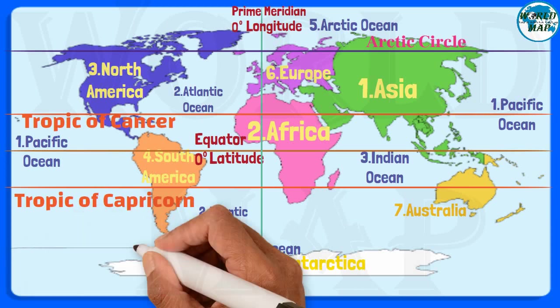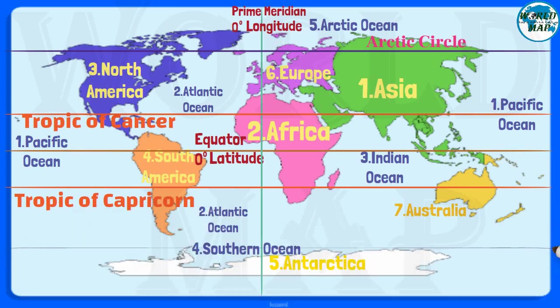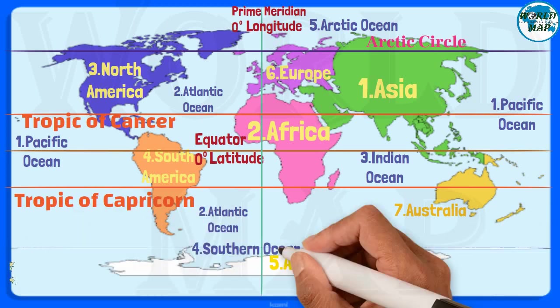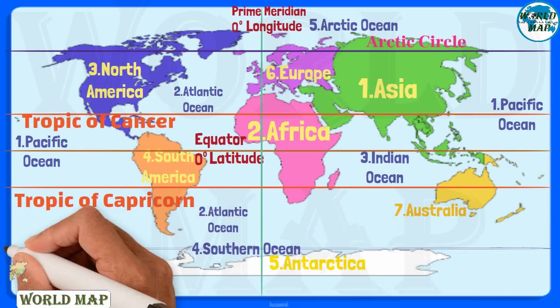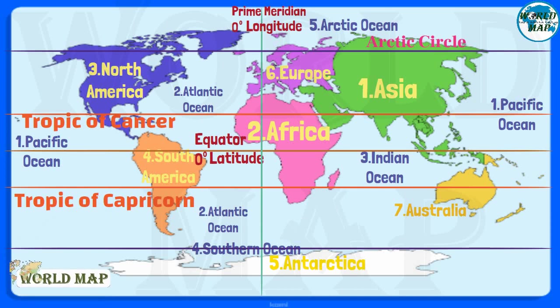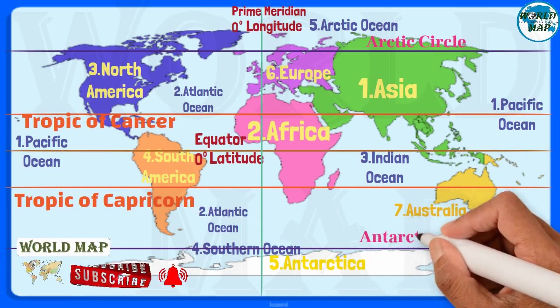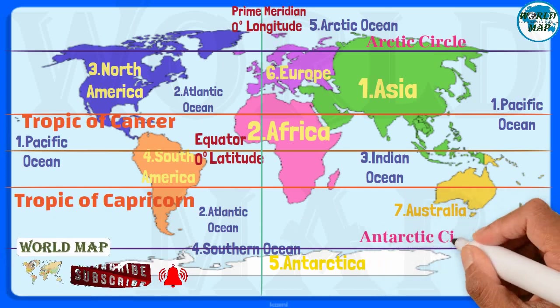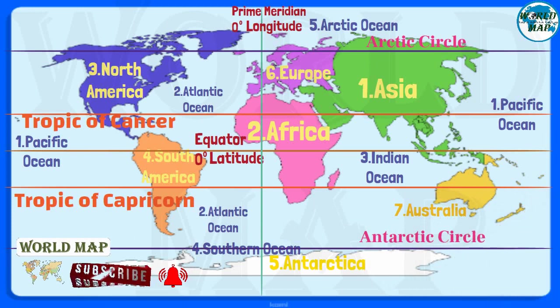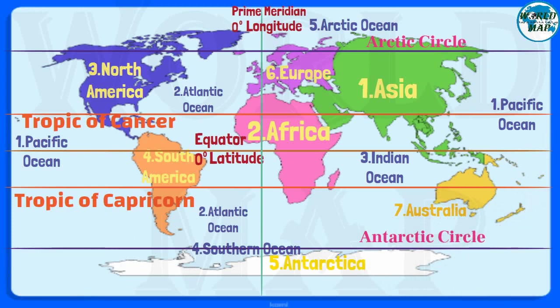Antarctic Circle. The Antarctic Circle is the most southerly of the five major circles of latitude that mark maps of Earth. The region south of this circle is known as the Antarctic, and the zone immediately to the north is called the Southern Temperate Zone.